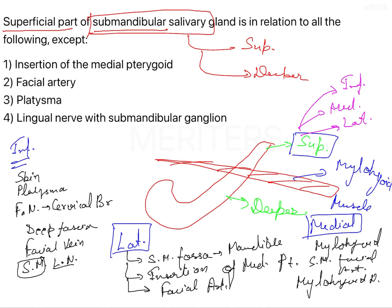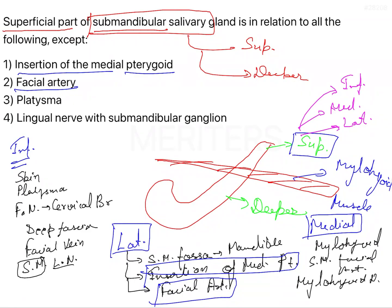Matching the options to the superficial part: insertion of the medial pterygoid — yes, on the lateral aspect; facial artery — yes, also on the lateral aspect; platysma — yes, related to the inferior surface. By exclusion, the answer is option 4, the lingual nerve with submandibular ganglion.